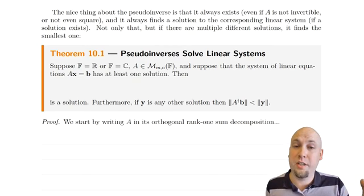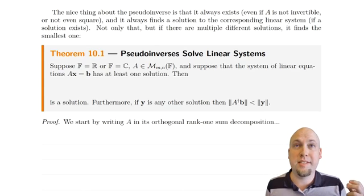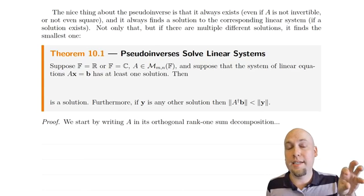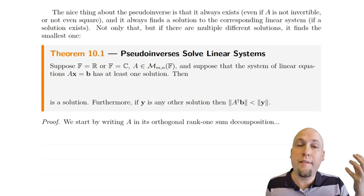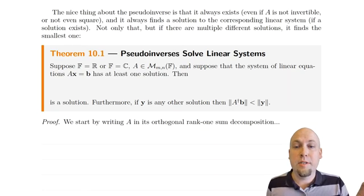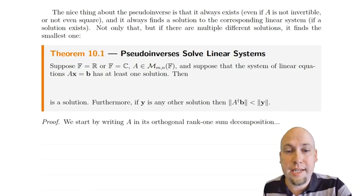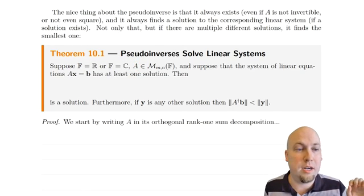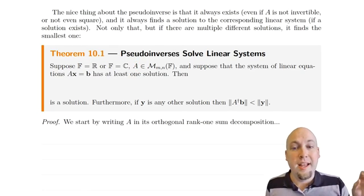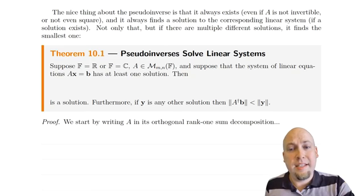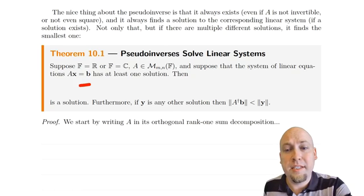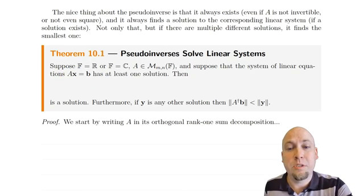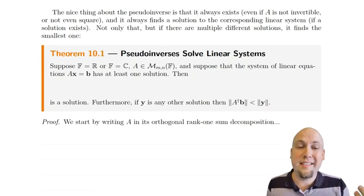This first theorem handles two of those cases: the case where you have a unique solution, or you have infinitely many solutions. It says: if you've got any matrix over the real or complex numbers, and suppose that your linear system Ax = b has at least one solution.